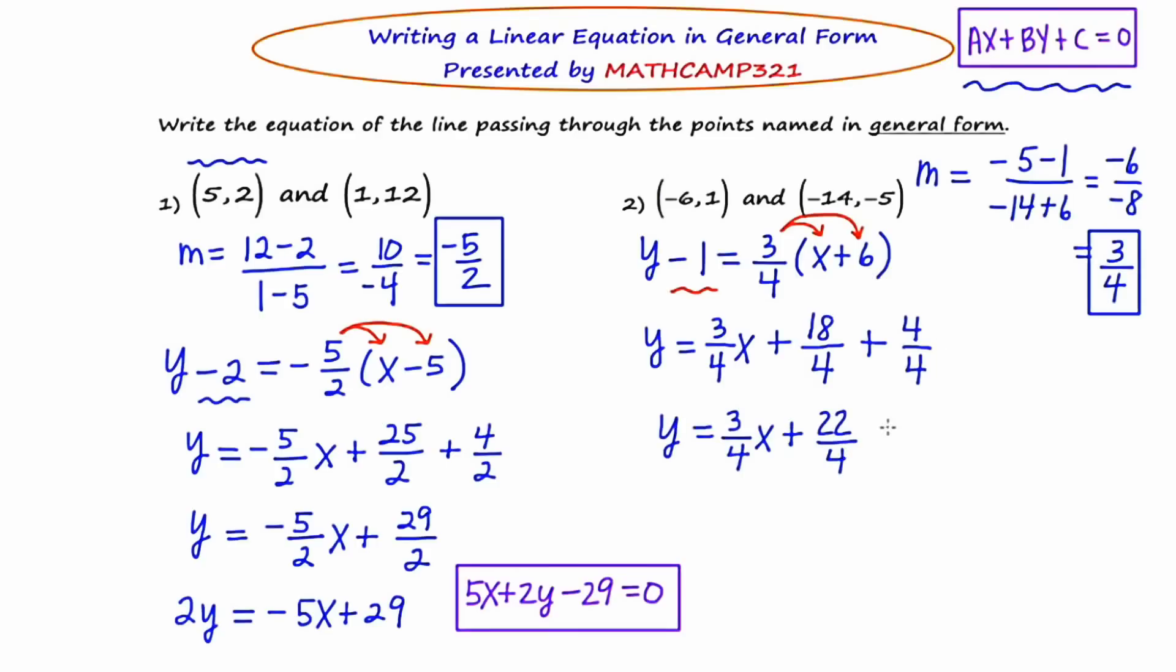Now I could reduce the 22 fourths, but I have to multiply through by the LCD right now to clear the fractions. So it's just going to be easier to leave it like that. I'm now going to multiply through by 4, which leaves me with 4Y equals 3X plus 22.